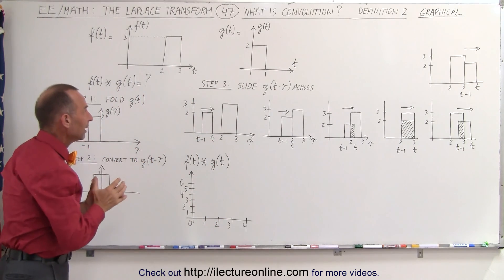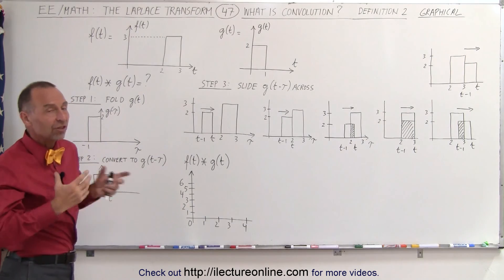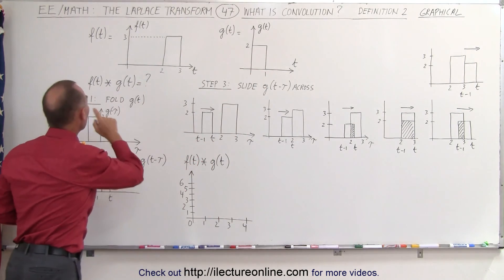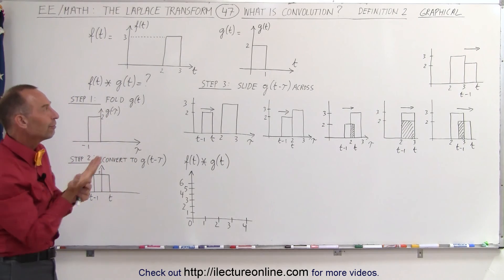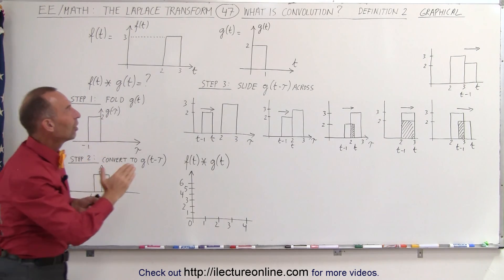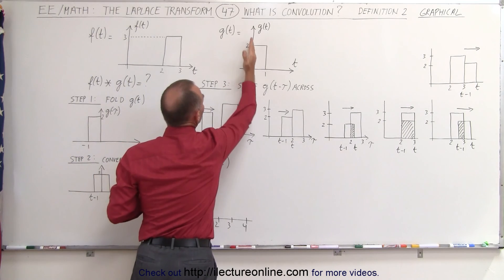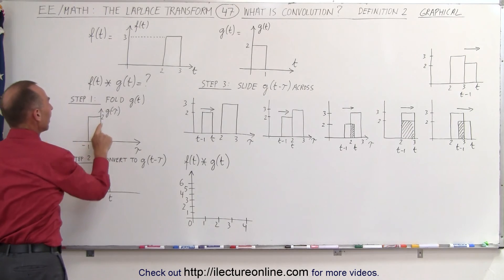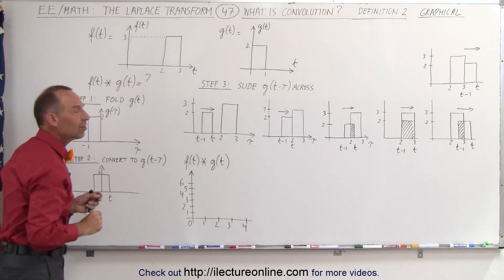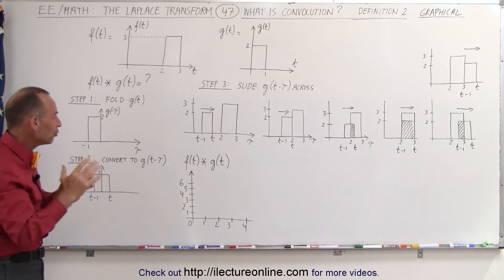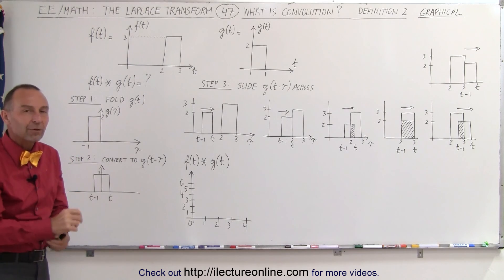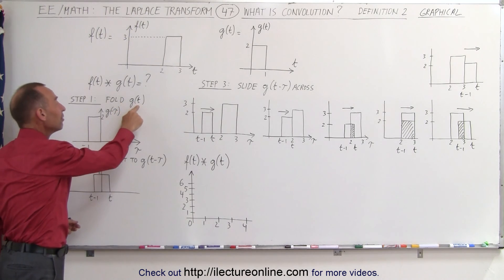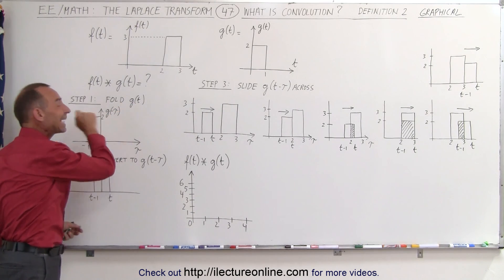The way to find the convolution is to take one of the two functions — in this case we're going to take the second function g of t — and in step 1 we're going to fold g of t. We're going to find the mirror image about the vertical axis; we're simply going to flip over the function. So now it's g of minus t. In order not to confuse the concept of t, since we folded it, we're going to use a dummy variable tau. So when we fold g of t, we end up with g of negative tau.